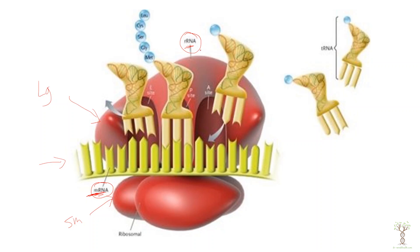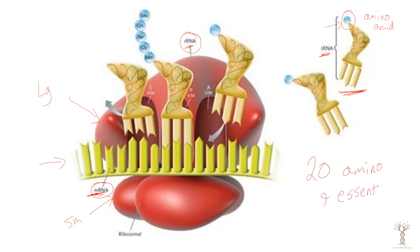Ribosomal RNA is produced in the nucleolus of the nucleus. Our third type of RNA molecule is called a transfer RNA, or tRNA. These are RNA sequences that are folded up and they carry an amino acid — every transfer RNA carries its own specific amino acid. We have 20 amino acids and nine of them are essential, meaning we must get them from our diet; the rest our cells can produce.